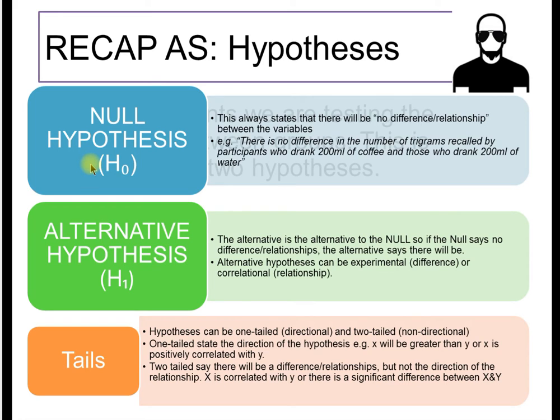To recap hypotheses from AS, there are two broadly speaking categories of hypothesis: the null and the alternative. Remember that the null says nothing will happen, there will be no correlation, and the alternative states that there will be an effect, there will be a difference, there is a correlation. The nomenclature we use at A2 to describe these are H0, capital H with a small zero, represents your null hypothesis, and your alternative is your H1.